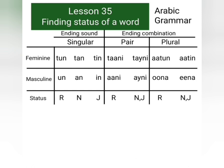Feminine singular words can have three types of ending sounds: tun, tan, or tin. Feminine pair words can have two types of ending combinations: tani or taini. Feminine plural words also have two types of ending combinations: atun and atin.